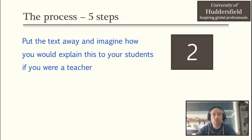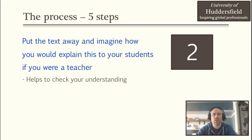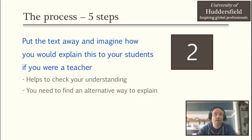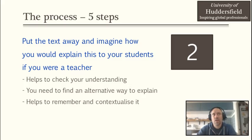The second step is probably the most important advice I can give you regarding dealing with academic texts — not only about paraphrasing, but something you can use when you are reading and also when you are writing. This step says that you have to put the original text away and imagine how you would explain what you have just read to your students if you were a teacher. This is a very, very useful strategy. It not only helps you check your understanding, but it also helps you find a different way to explain what you have just read, because if you just read back to the students what was written in the original journal or book, then you're not really a teacher — the students can also read the book themselves.